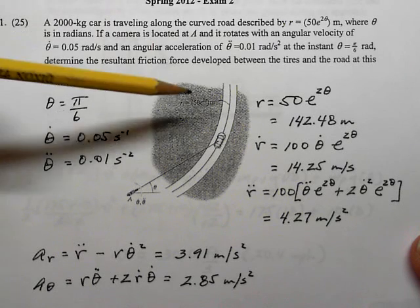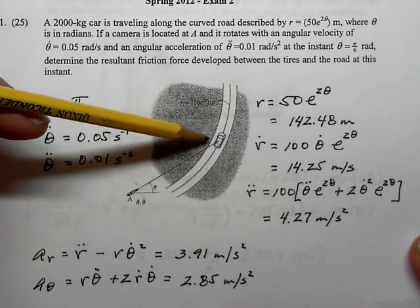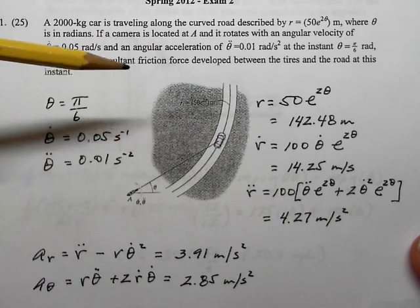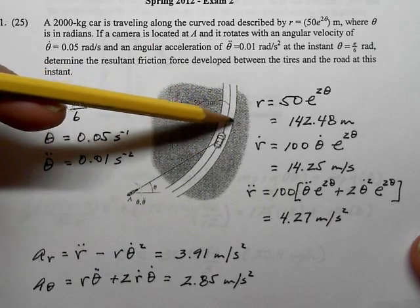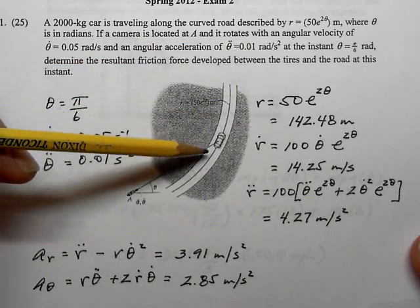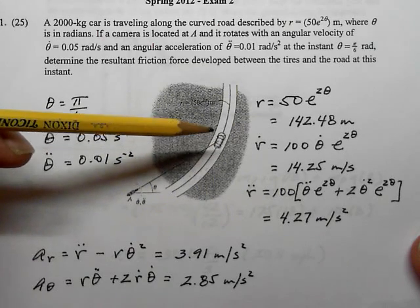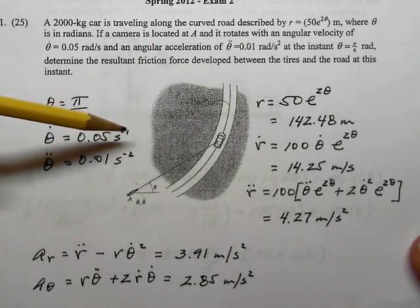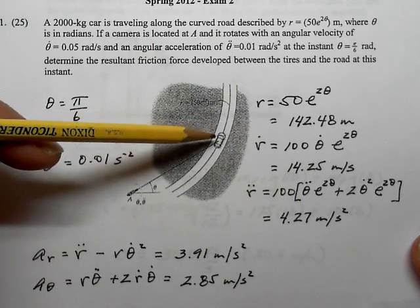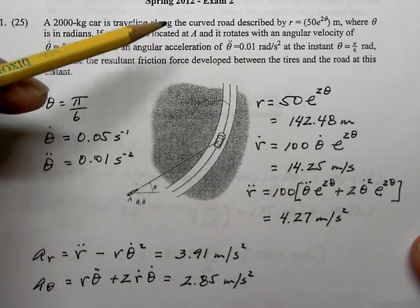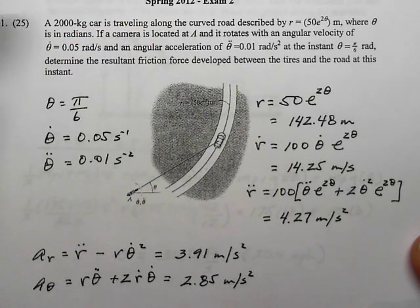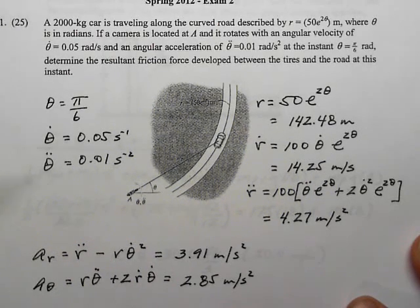The force between the tires and the road could come from two reasons: there could be a normal direction force or a tangent direction force between the tires and the road. In the end it doesn't matter where the forces come from as long as we account for all of it. There could also be radial and theta direction forces. As long as we know the total acceleration, it doesn't matter how we calculate the forces — so what we need is the total acceleration.